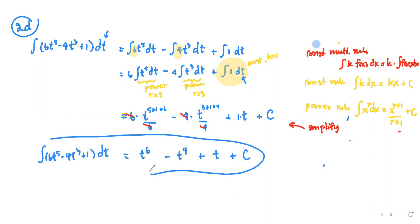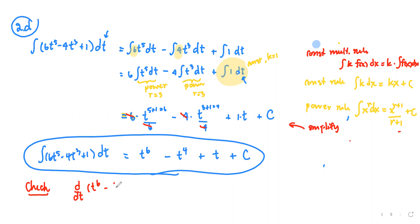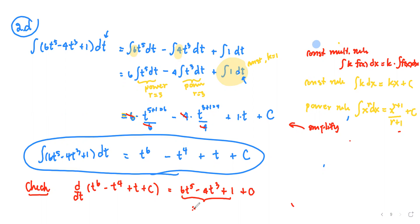If you prefer to check the answer, find the derivative with respect to t of t to the sixth minus t to the fourth plus t plus C. You would get 6t to the fifth minus 4t to the third plus 1 plus 0, which is exactly the same as the original integrand — confirming the answer is correct.